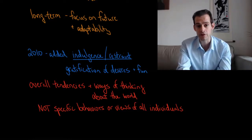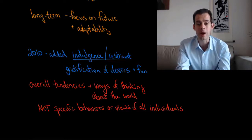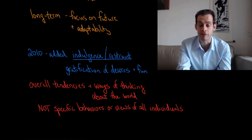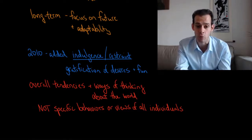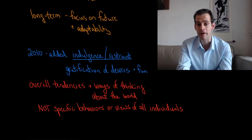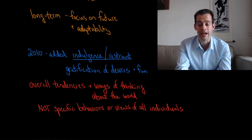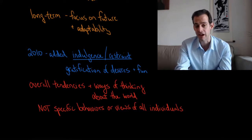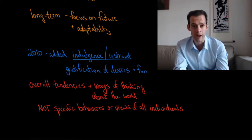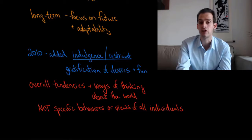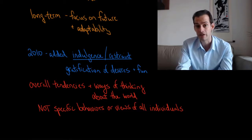It's important to remember that these cultural dimensions are just ways of thinking about how cultures might differ from one another. They're about overall tendencies and ways of thinking about the world, but they're not about specific behaviors, and they're certainly not about the specific views of individuals within that culture. So these are overall patterns — not suggesting that everybody in that culture will think a certain way about something like power distance or the importance of individualism versus collectivism.